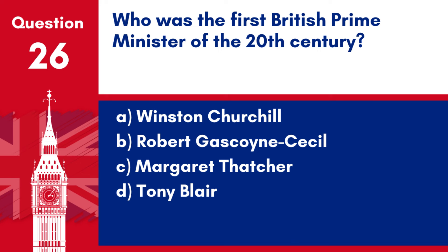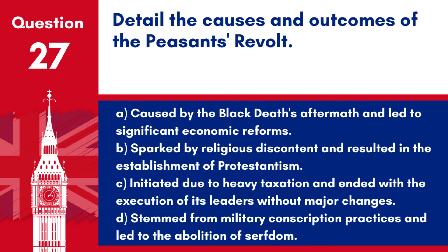Question 26. Who was the first British Prime Minister of the 20th century? a. Winston Churchill. b. Robert Gascoigne Cecil. c. Margaret Thatcher. d. Tony Blair. Answer: b. Robert Gascoigne Cecil, 3rd Marquess of Salisbury, served as Prime Minister at the start of the 20th century, from 1895 to 1902.